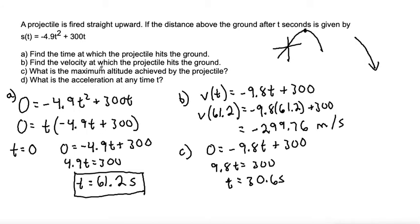But we're looking for the maximum altitude, not the time at which it achieves the maximum altitude. So let's take this time and plug it back into our distance function, which gives us s of 30.6 equals negative 4.9 times 30.6 squared plus 300 times 30.6.